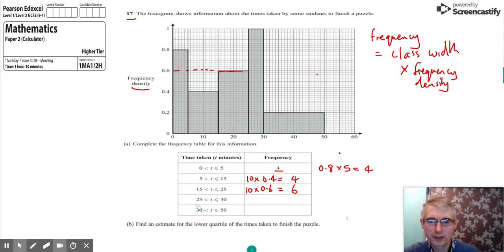Repeating that process, the next group has got a width of 5. So it's 5 times the height of that, which is 1. And so it's 5 times 1, which is 5 for that frequency.